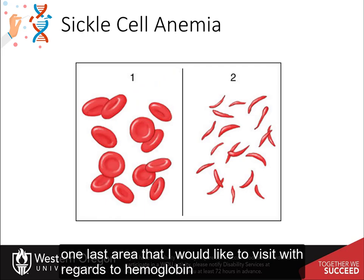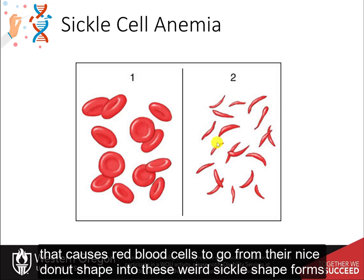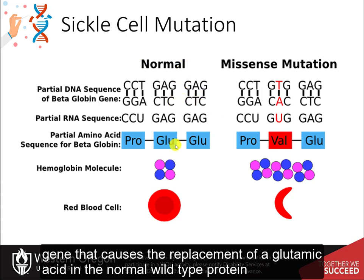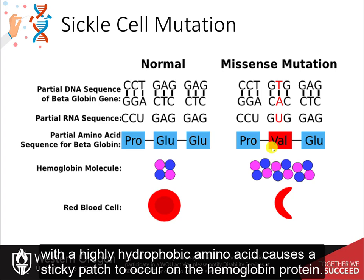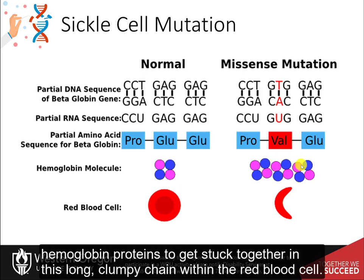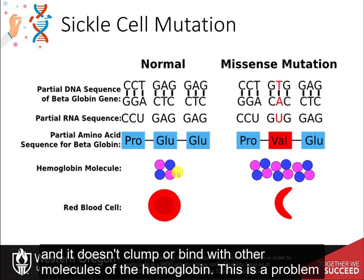One last area regarding hemoglobin is the condition of sickle cell anemia, which causes red blood cells to go from their normal donut shape into sickle-shaped forms. The most common form is caused by a single mutation in the beta globin gene, replacing a glutamic acid in the wild-type protein with a valine in the mutant form. This shift from a highly polar to a highly hydrophobic amino acid causes a sticky patch on the hemoglobin protein that is shielded away from the aqueous environment, causing multiple hemoglobin proteins to clump together in long chains within the red blood cell.